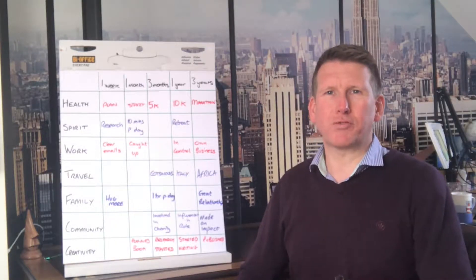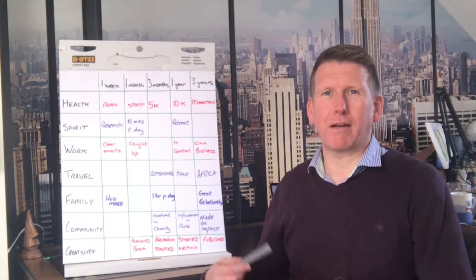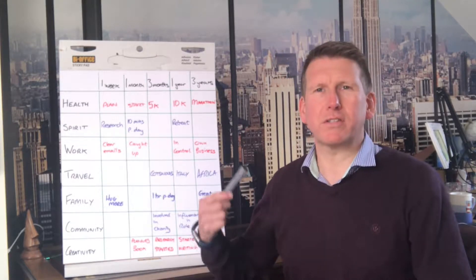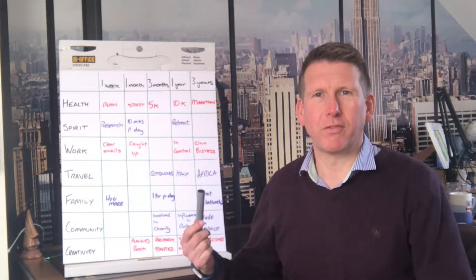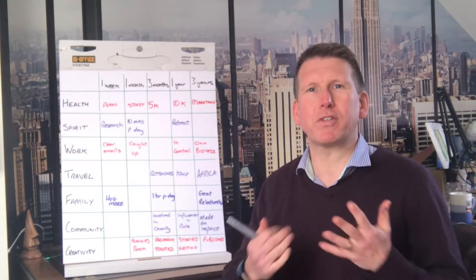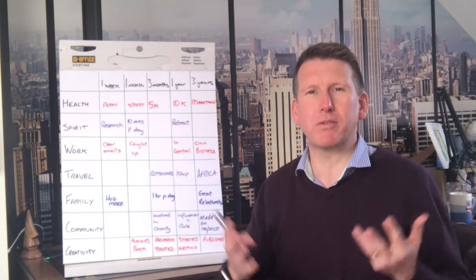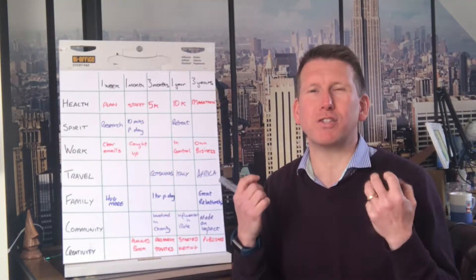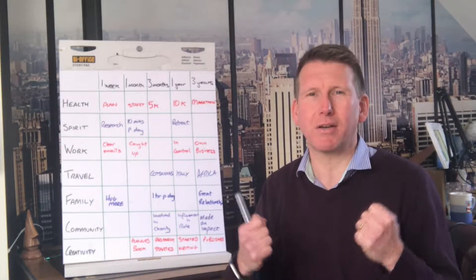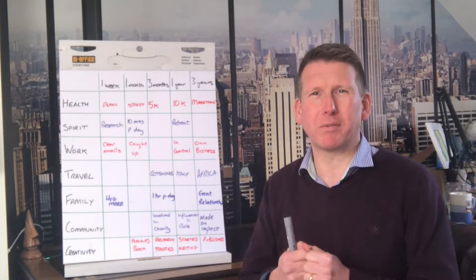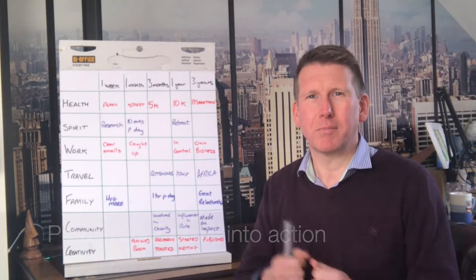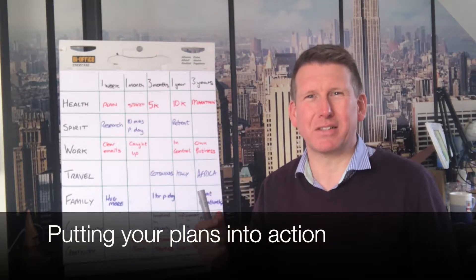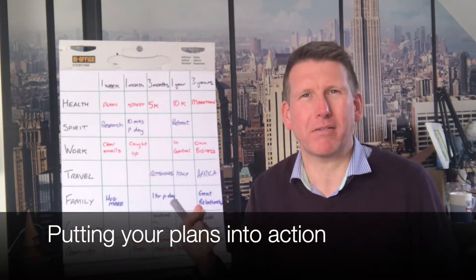Here we are with a simple structure to outline all of your goals — the things that you want to achieve. We've created this beautiful vision of the future, where it is you really want to go and how you really want to be, but how do we actually put this into action? How do you put the plan around this?